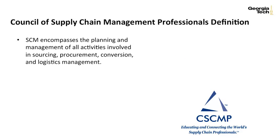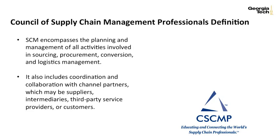Let's take a look at the definition provided by the Council of Supply Chain Management Professionals, also known as CSCMP. Supply chain encompasses the planning and management of all activities involved in sourcing, procurement, conversion, and logistics management. It also includes coordination and collaboration with channel partners, which may be suppliers, intermediaries, third-party service providers, or customers.